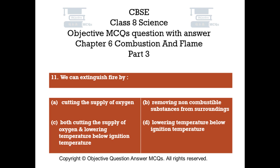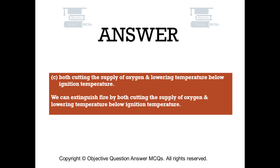Question number 11. We can extinguish fire by: Option A Cutting the supply of oxygen, Option B Removing non-combustible substances from surroundings, Option C Both cutting the supply of oxygen and lowering temperature below ignition temperature, Option D Lowering temperature below ignition temperature. The right answer is Option C — we can extinguish fire by both cutting the supply of oxygen and lowering temperature below ignition temperature.